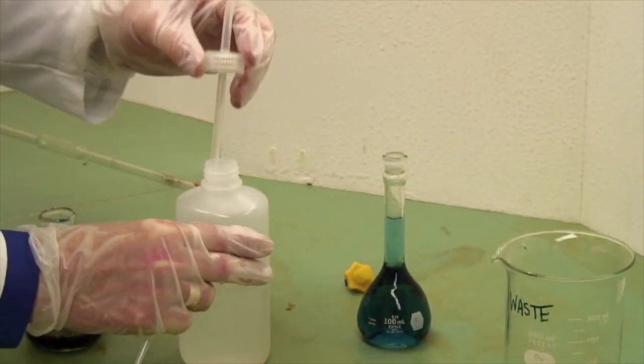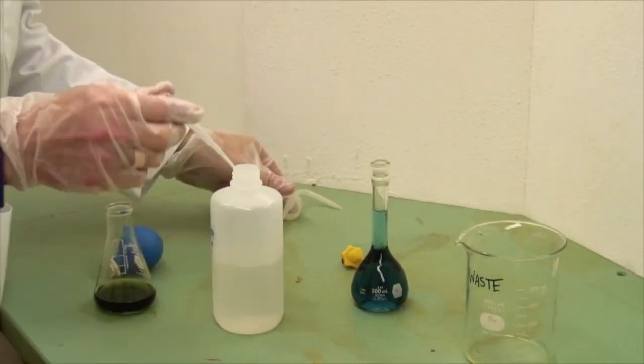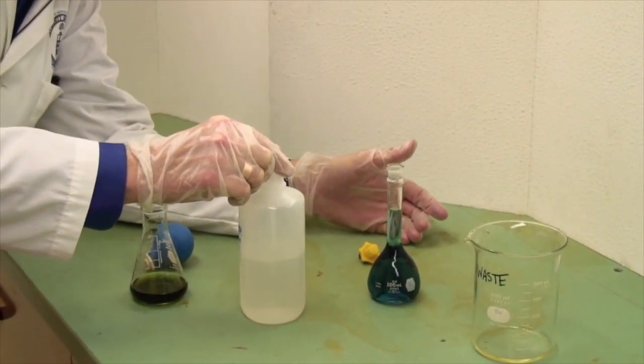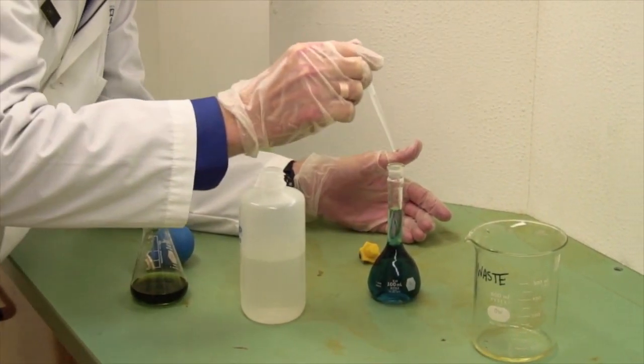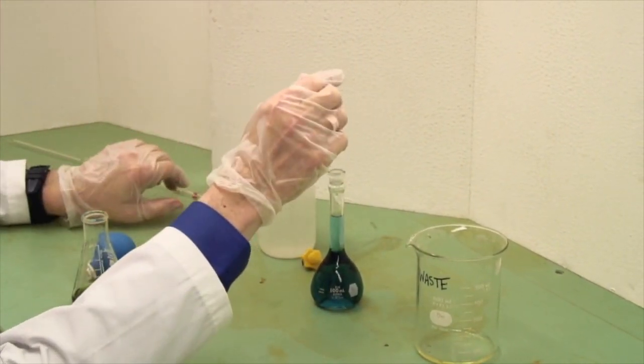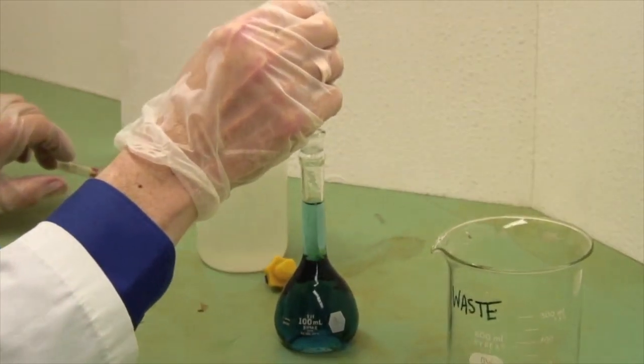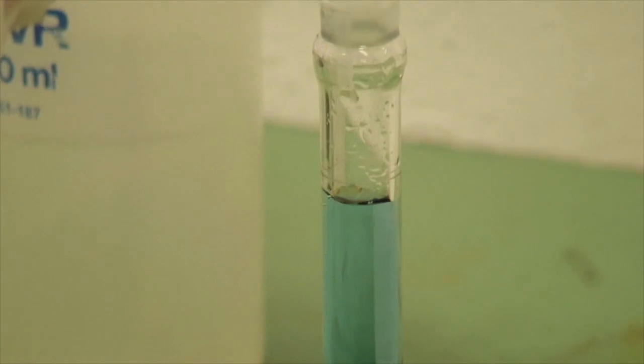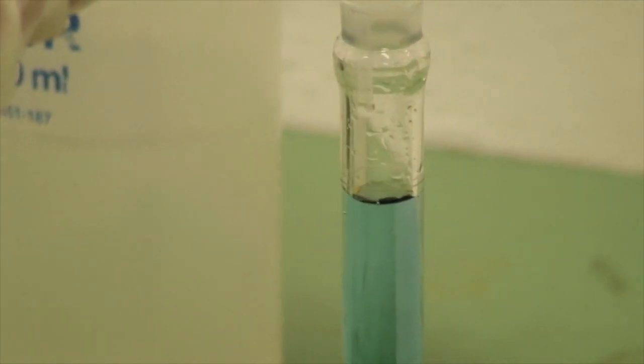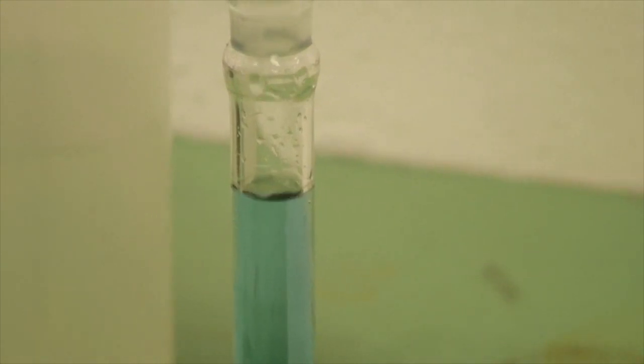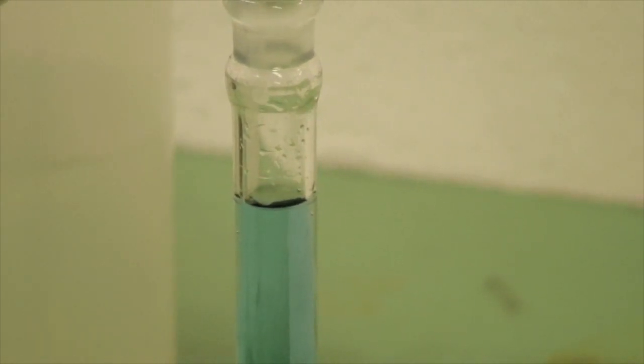Now that we're almost at the top, instead of using the squeeze bottle, which is not actually all that easy to control, use a dropper. And I'm going to get my head down so that I'm seeing the line of the volumetric calibration rather than as a circle. Do this at eye level. Add it drop-wise until the bottom of the meniscus is tangential to the line.